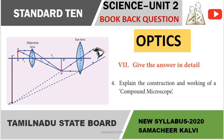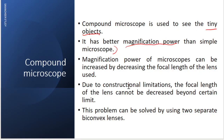So, in the question we will look at compound microscope. Compound microscope is used to see very small objects. It is used to see tiny objects; it has better magnification power than a simple microscope. The magnification power of the microscope can be increased by decreasing the focal length of the lens used.